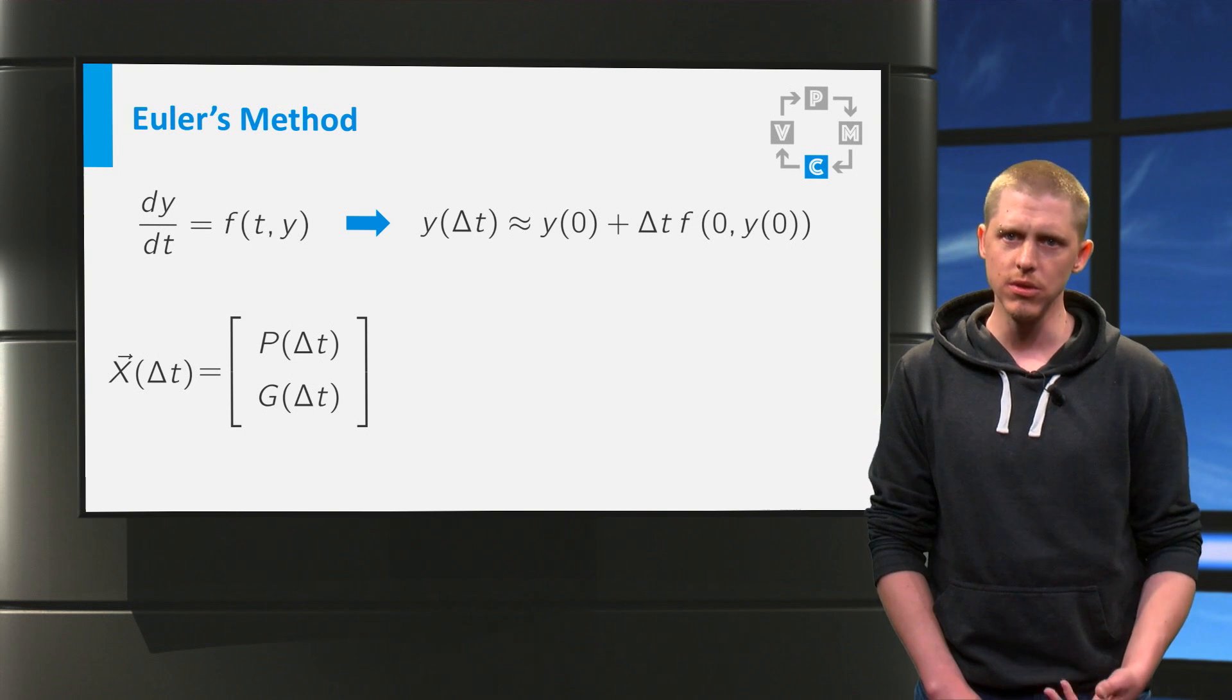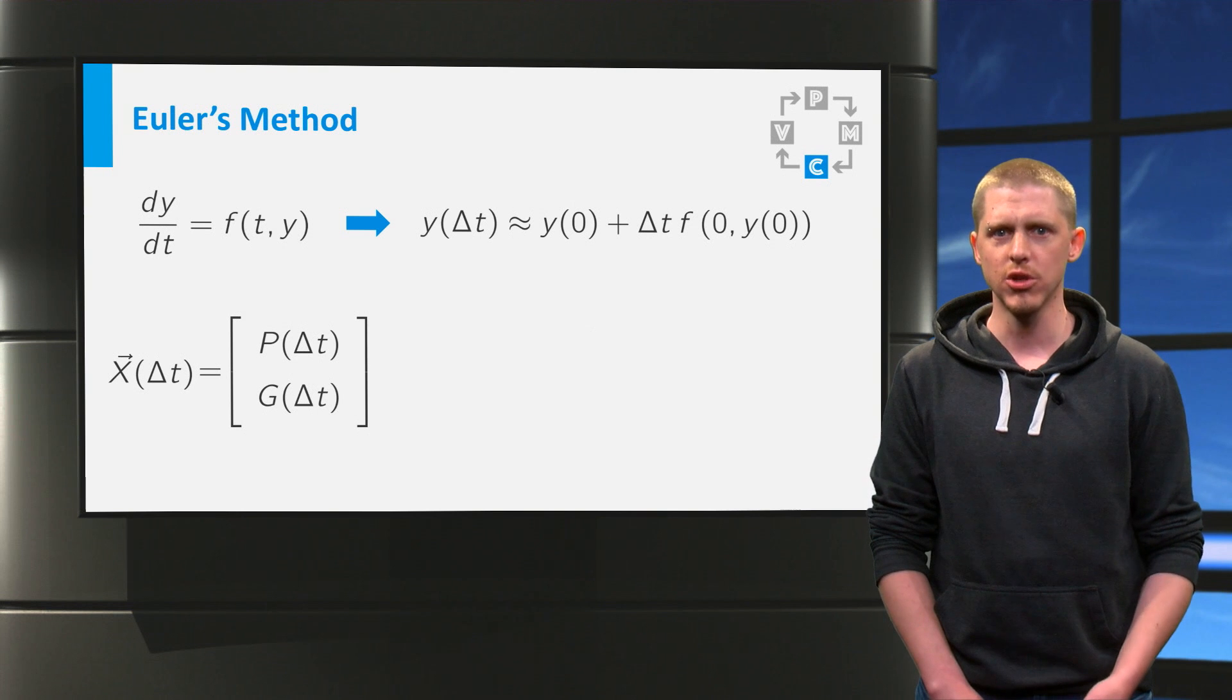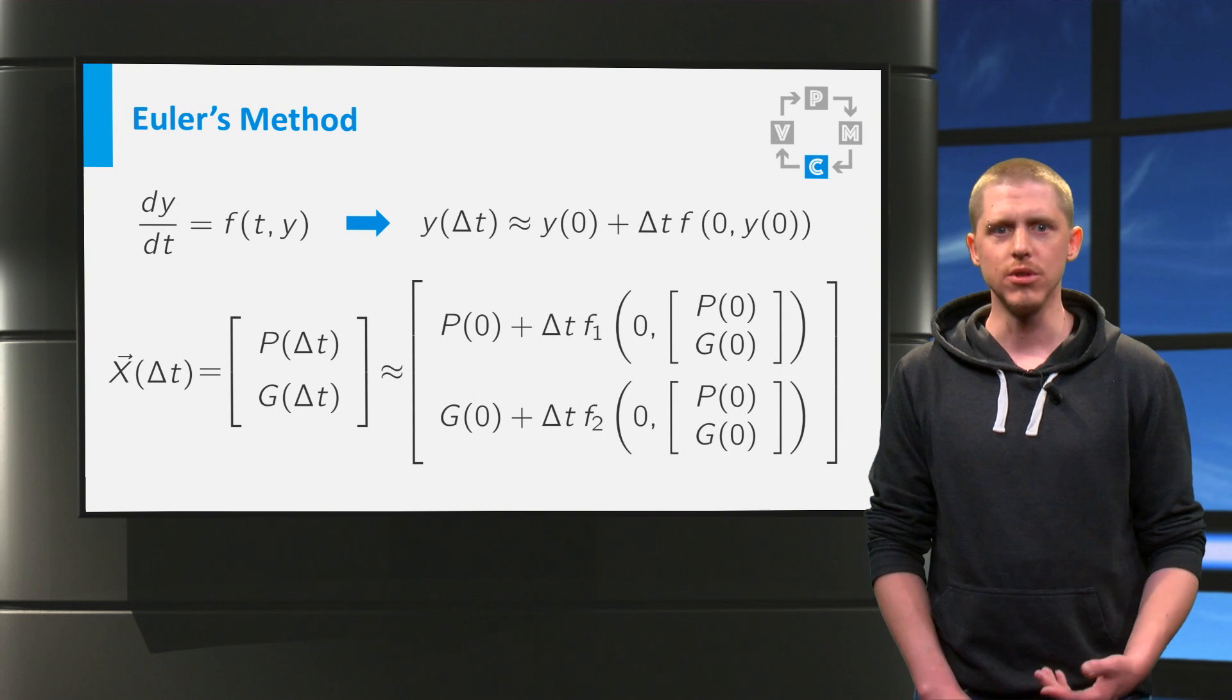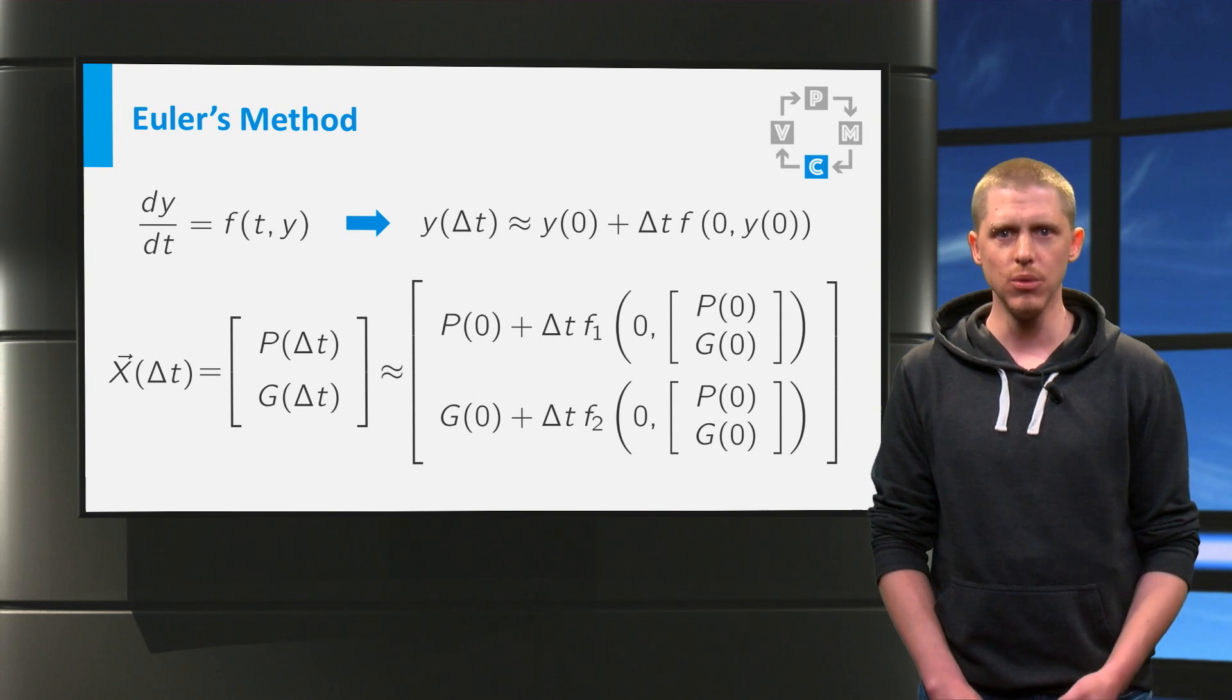But for these two values, we know an approximation if we use Euler's method. Using these approximations, you get this, where I use the two functions f1 and f2 we defined before.